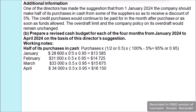We will first calculate the cash purchases. We take half of the purchases and multiply by 95%, as the 5% discount means we only pay 95%. For January: $28,600 × 0.5 × 0.95 = $13,585. February: $31,000 × 0.5 × 0.95 = $14,725. March: $33,000 × 0.5 × 0.95 = $15,675. April: $34,000 × 0.5 × 0.95 = $16,150.